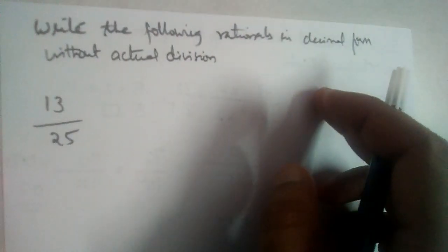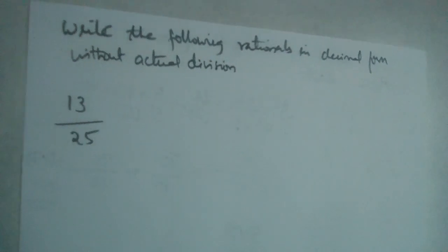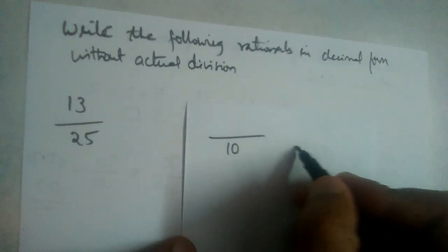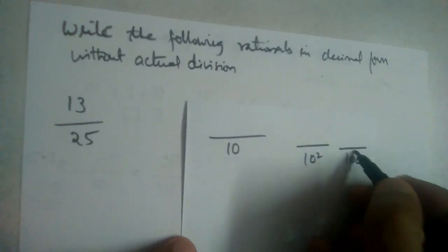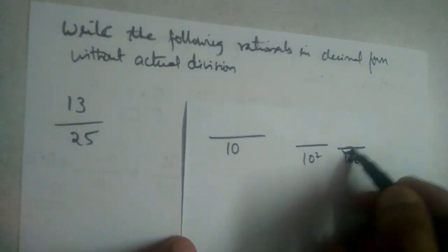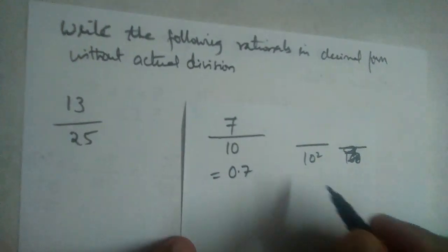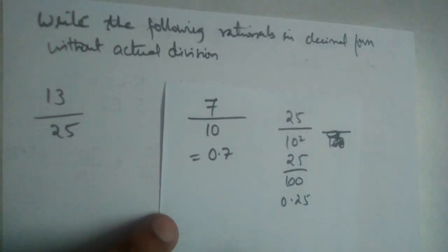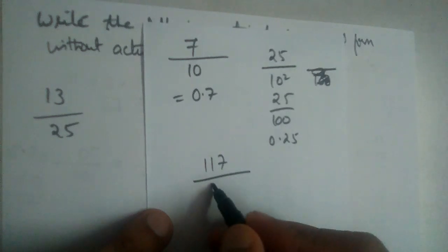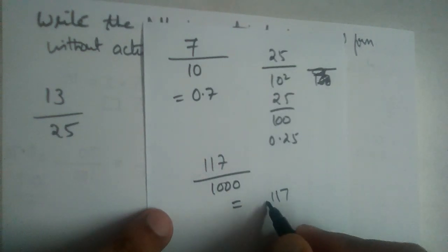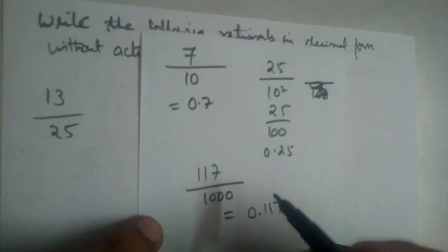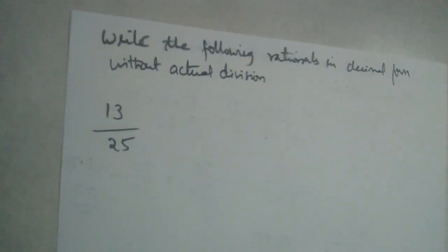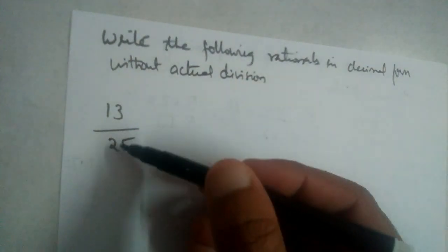Write the following rationals in decimal form without actual division. If the denominator has powers of 10 — like 10, 100, or 1000 — it is easy to divide. For example, 7/10 = 0.7, 25/100 = 0.25, and 117/1000 = 0.117. So our aim should be to make the denominators into powers of 10.